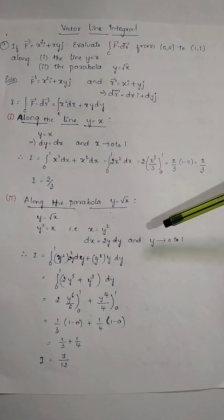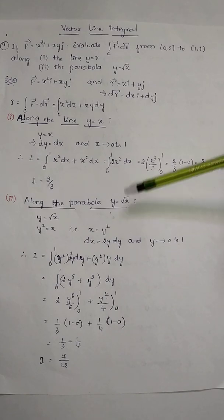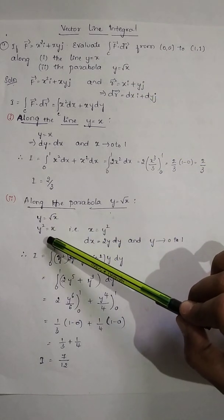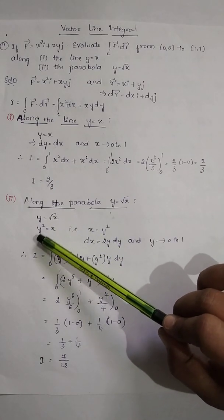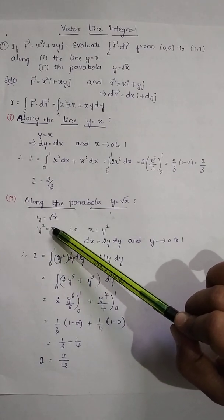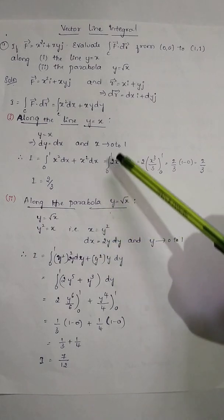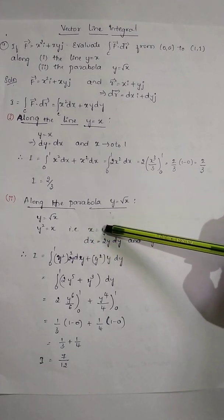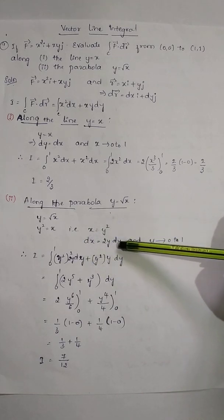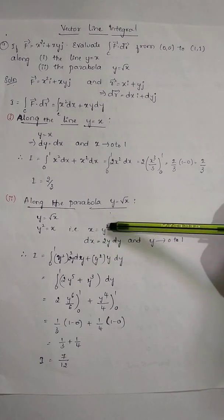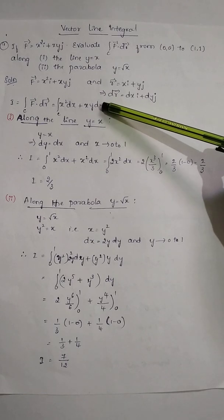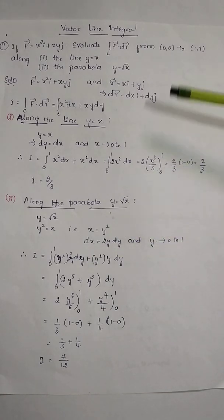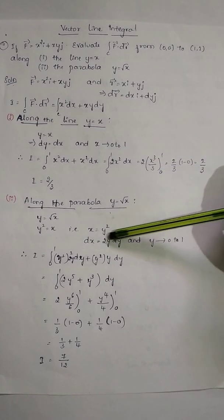Now for the second path along the parabola y = √x. For convenience, square both sides to get y² = x, i.e., x = y². Differentiating gives dx = 2y·dy. This converts I to a single variable y, with y varying from 0 to 1.